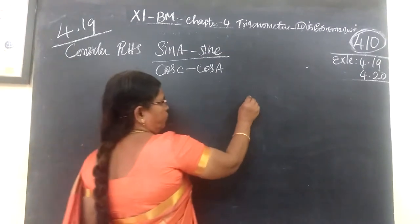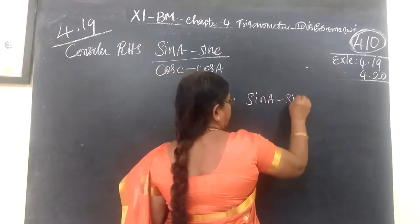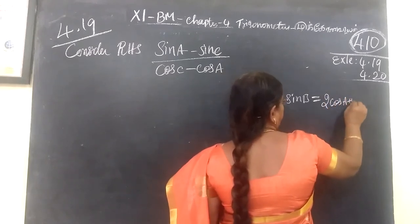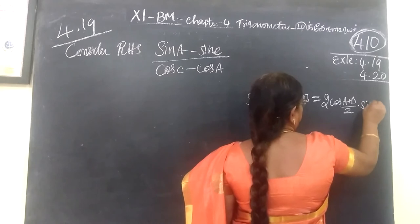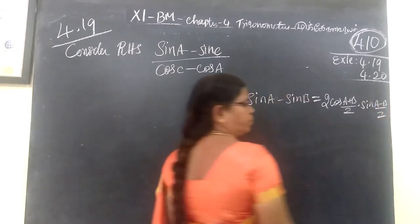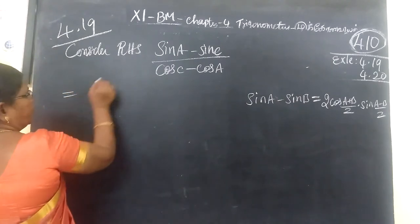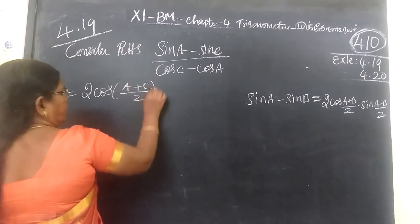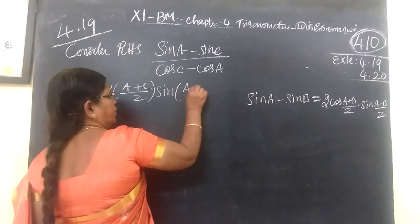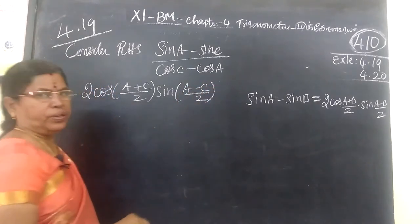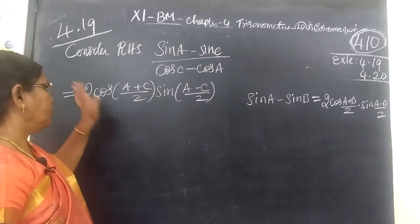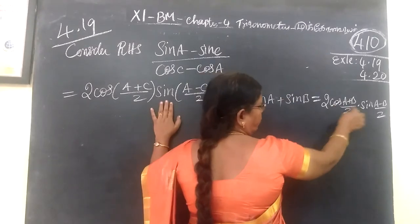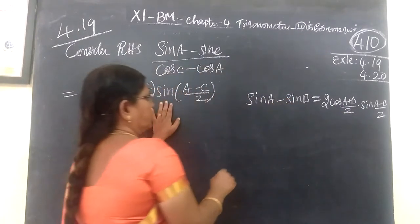We know the formula: sin A minus sin B equals 2 cos of (A plus B)/2 into sin of (A minus B)/2. So this is the formula.